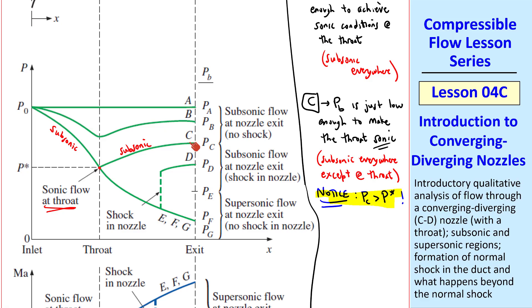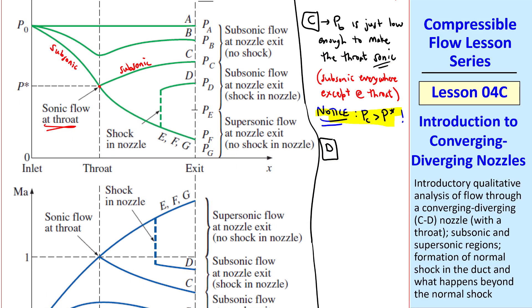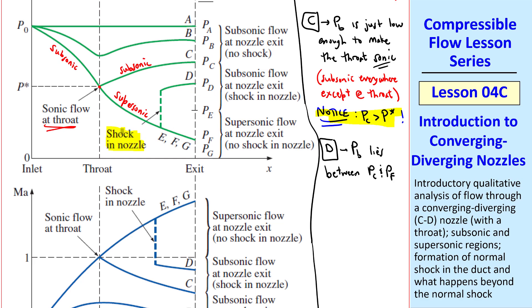Case D is when Pb lies between Pc and Pf. Pf is down here, Pc is up here, and Pd is somewhere in between. What happens is the flow goes supersonic, but it can't remain supersonic unless the back pressure is less than or equal to Pf. So when it's up here, we get a normal shock in the duct or nozzle. The Mach number in front of the shock is greater than 1, supersonic, but it's subsonic after the shock, and for subsonic flow in a diverging duct, pressure rises and velocity or Mach number decreases.